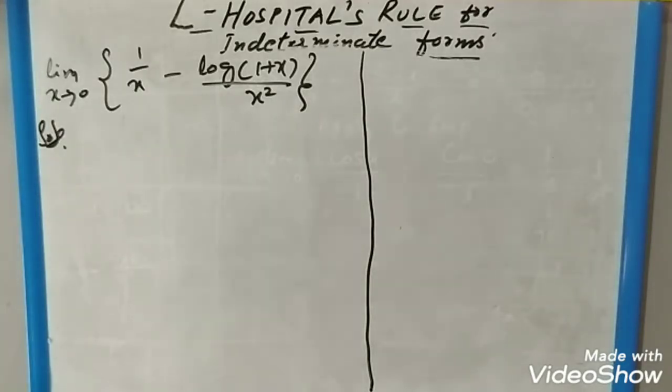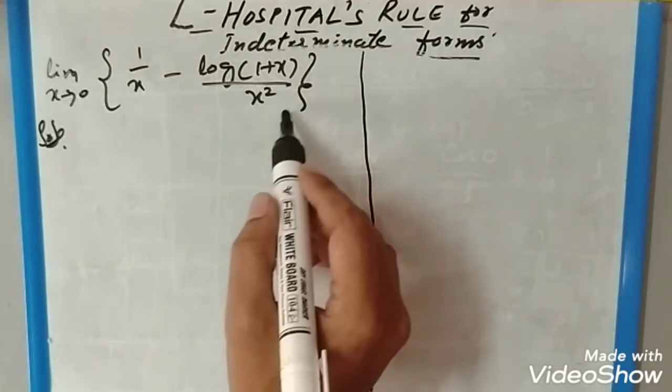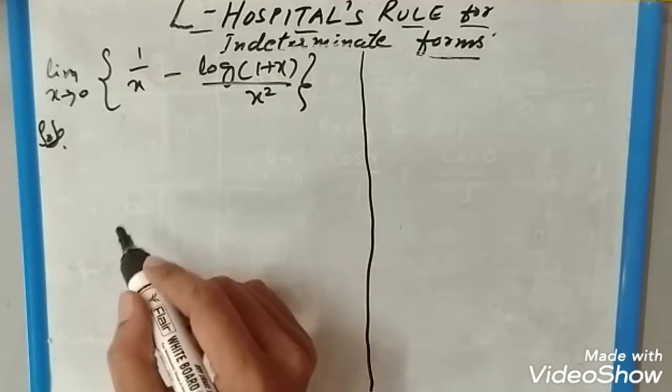In today's class we are going to see the next type of indeterminate form. So we have one example here: limit x tends to 0 of 1/x minus log(1+x) divided by x², all over x².